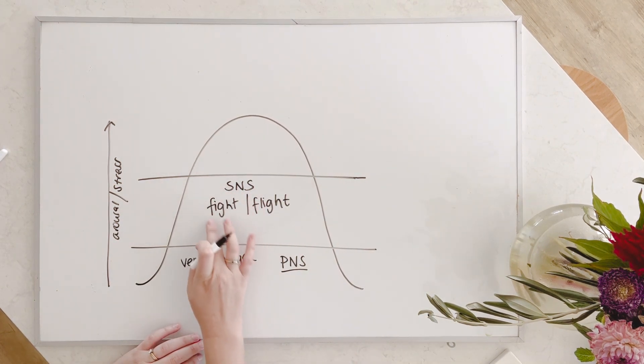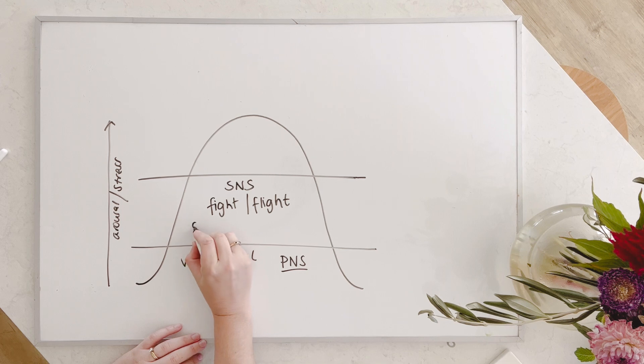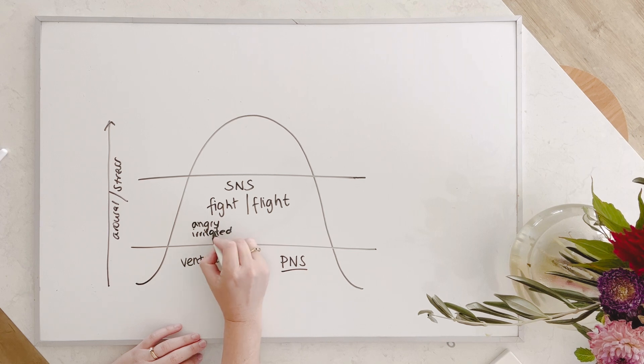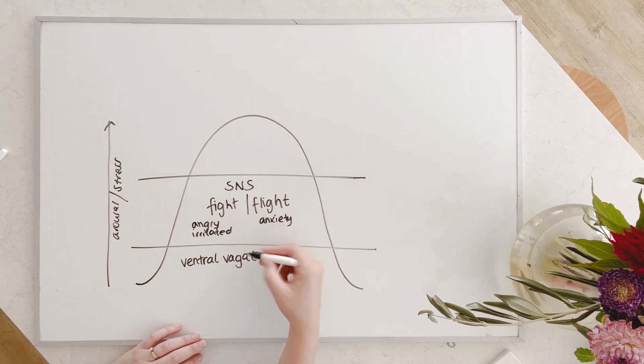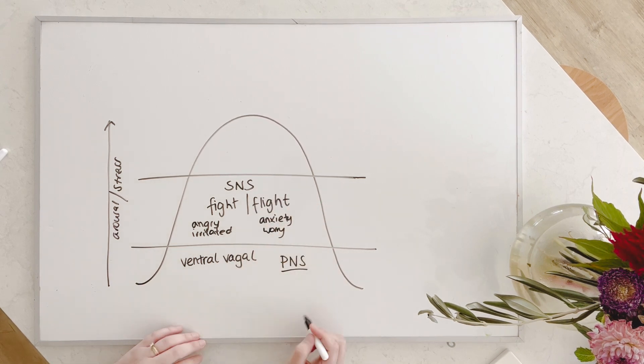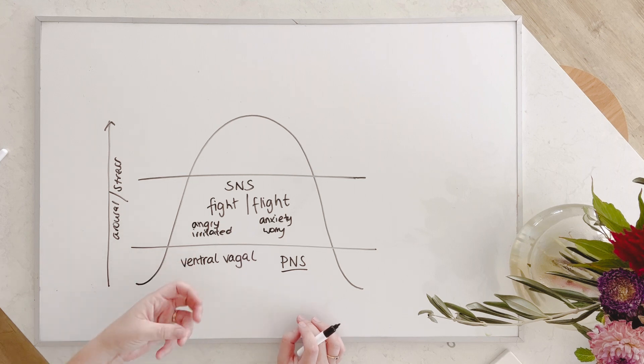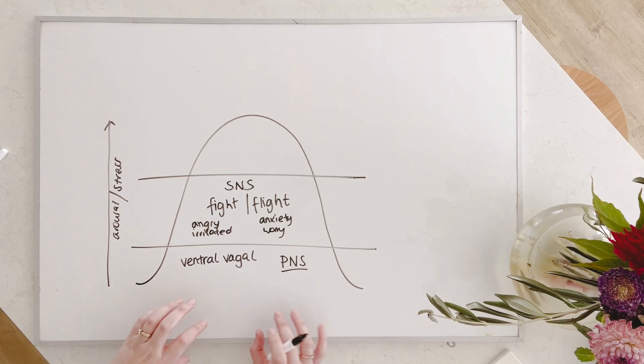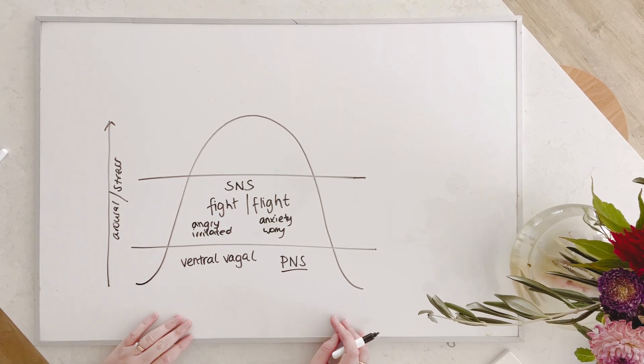And here, in fight, we might begin to feel angry, or aggressive or irritated. And over here in flight, this is where we'll feel anxiety, this is where we'll feel panic and worry. Flight might also look like that kind of go, go, go energy of feeling like we're not able to rest, or to be still, or to feel relaxed and calm and content in our present moment.